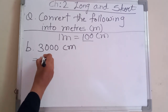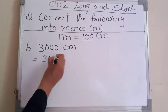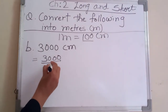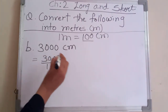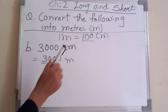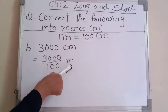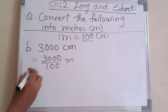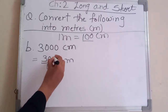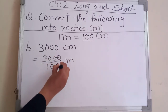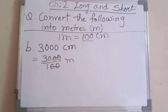So we write: three thousand divided by hundred. Draw the fraction line and write hundred. When you divide by hundred, immediately write the unit as meter — don't write centimeter. Now cancel the two zeros in the numerator and the two zeros in the denominator.